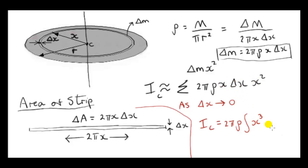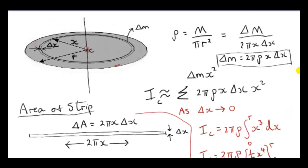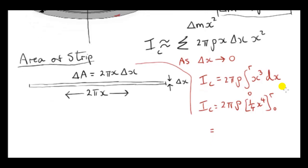We replace delta x with dx and sum the moments of inertia of all the strips. We let delta x approach zero, so the summation becomes an integral. The factor 2 pi rho is a constant that can be pulled outside the integral. We integrate x cubed from x equals 0 to x equals r — the outermost ring is at the edge of the disk with radius r. We then substitute rho equals m over pi r squared, plug in the upper limit r to get a quarter r to the power 4, and the lower limit gives zero.